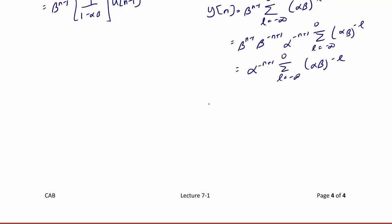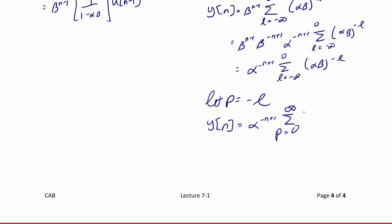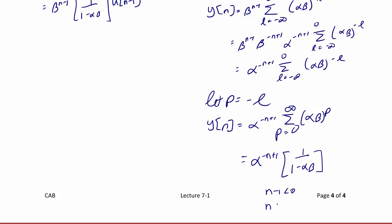We do another substitution, letting p = −l. Our summation becomes y[n] = α^(−n+1) times the summation from p = 0 to ∞ of (αβ)^p. The final answer for this case is α^(−n+1) · 1/(1 − αβ), valid for n−1 < 0, or n < 1, which we write as u[−n].